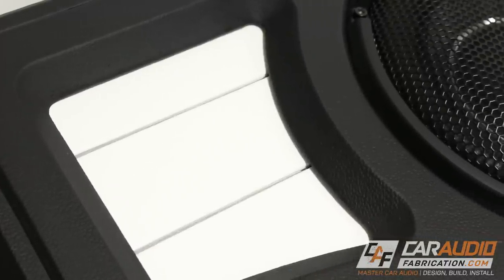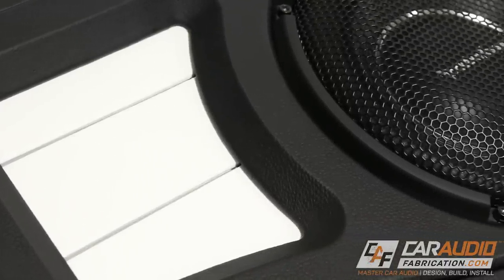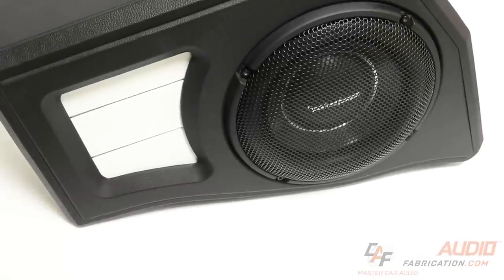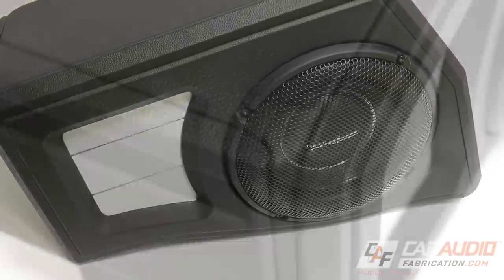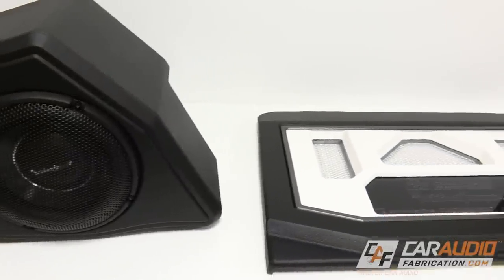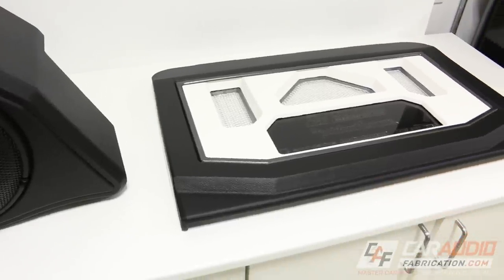So here we have it: with all the finishing touches put in place, we now have the completed custom layered style subwoofer enclosure. I really like the way that this box turned out. Even though it's the same vinyl on most of the box, I feel like the lines give it a really nice sleek look, and the accent with the white really matches the custom amplifier rack.